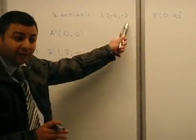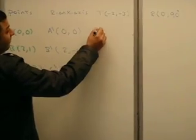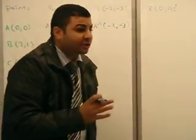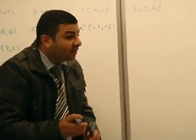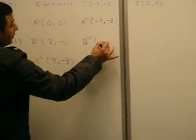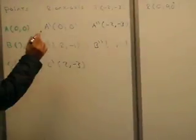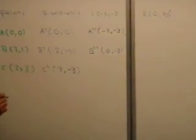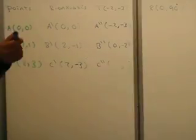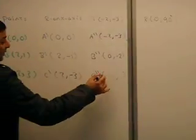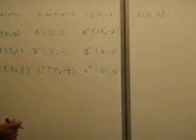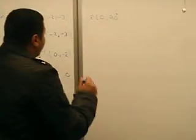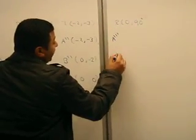Second one, I want to make translation negative two and negative three. For translation, we make addition: X-axis with X-axis, Y-axis with Y-axis. A double dash becomes negative two and negative three. B double dash: two minus two equals zero, and one minus three equals negative two. C double dash: two minus two equals zero, three minus three equals zero.